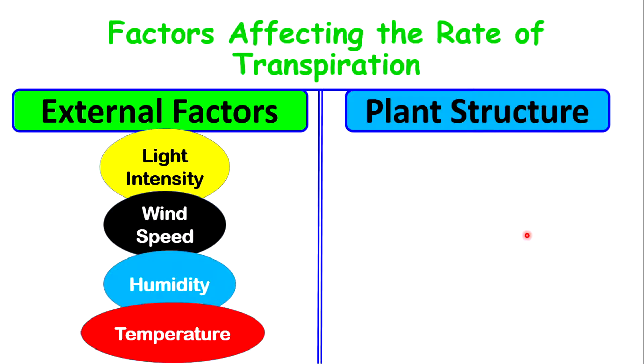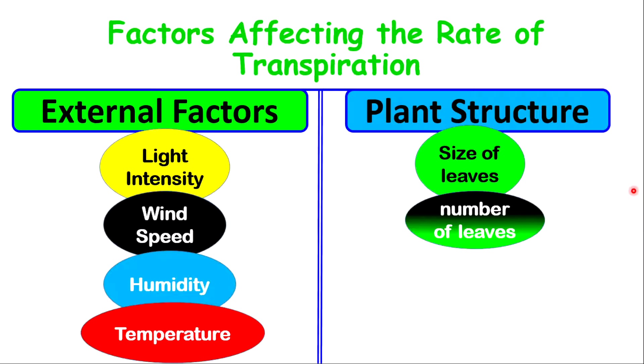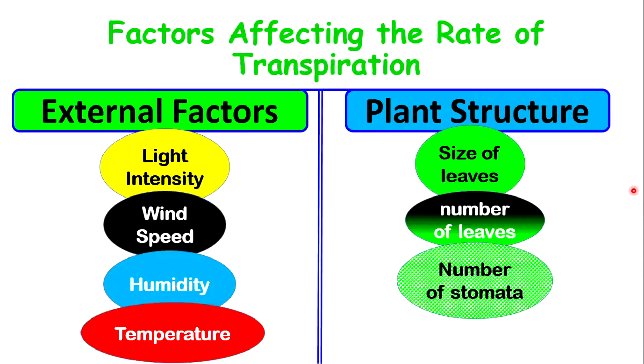Let us look at the structures of the plant that may contribute to or affect the rate of transpiration. The first is the size of leaves. Bigger leaves create greater surface area, which means more stomata, resulting in greater loss of water. The number of leaves: more leaves equivalent to more stomata, which means greater chance for water loss. The number of stomata, which means the number of leaf pores—greater leaf pores means greater water loss.